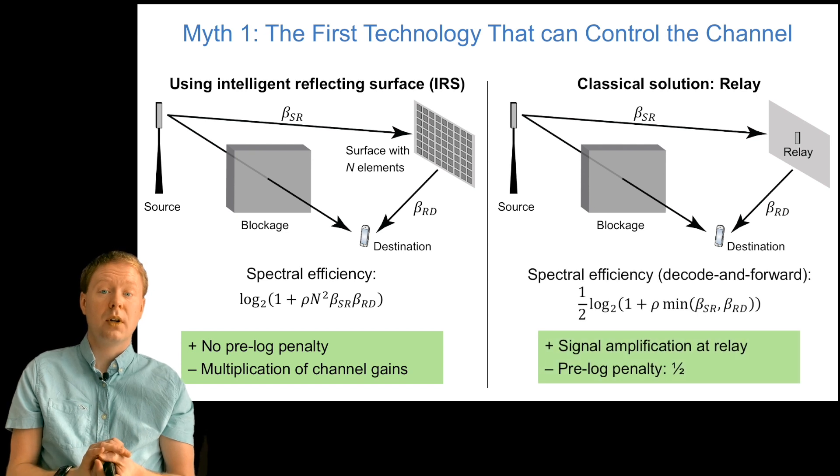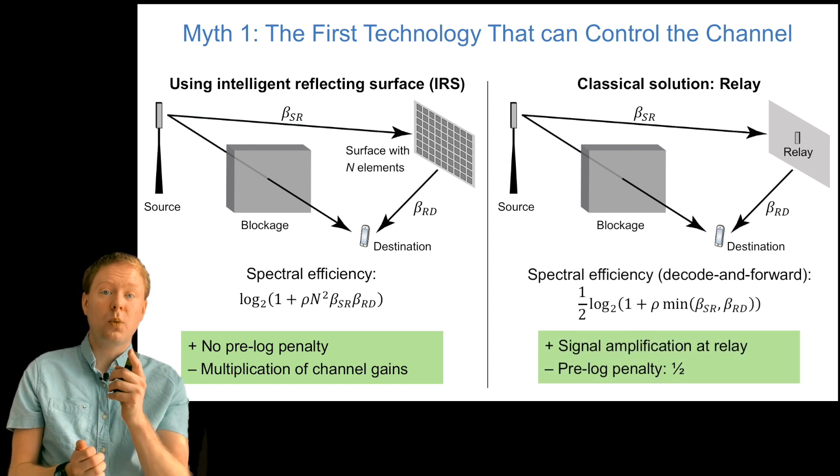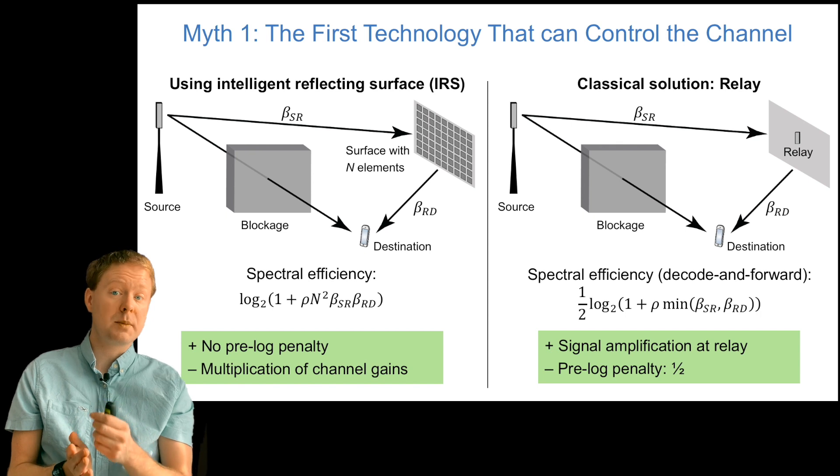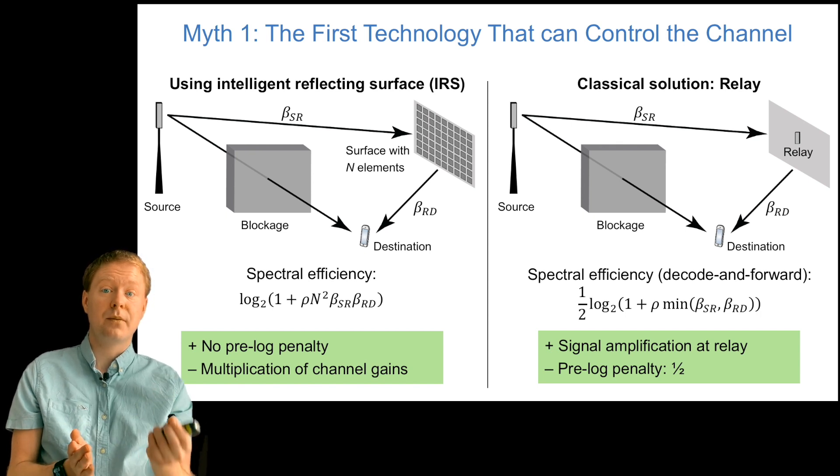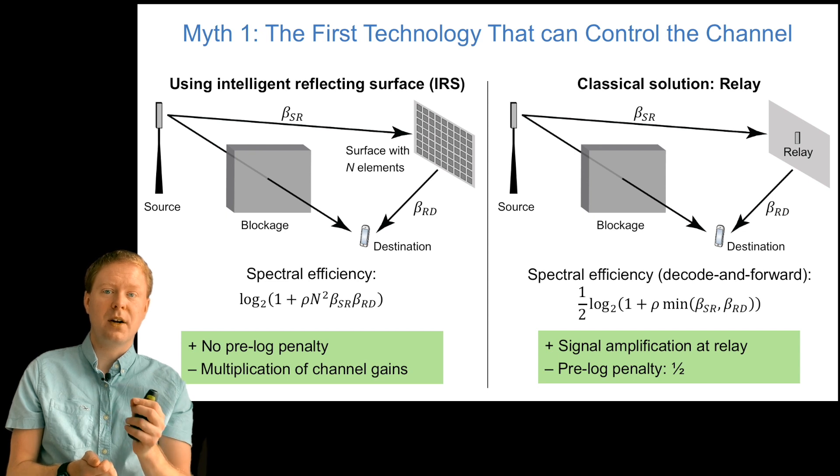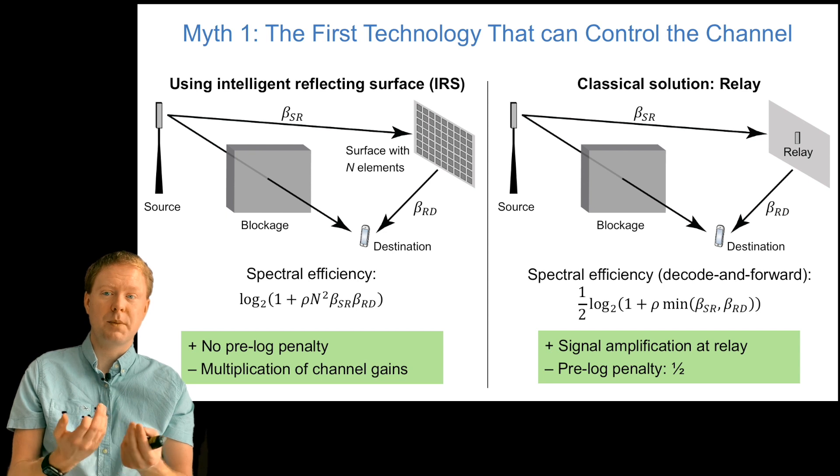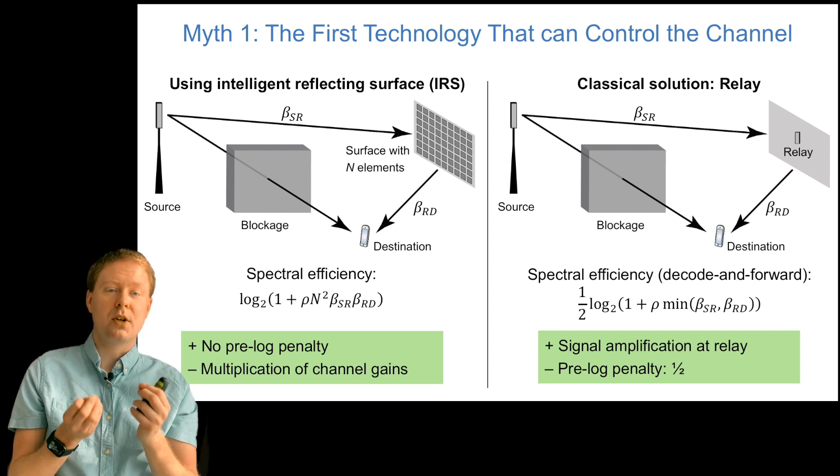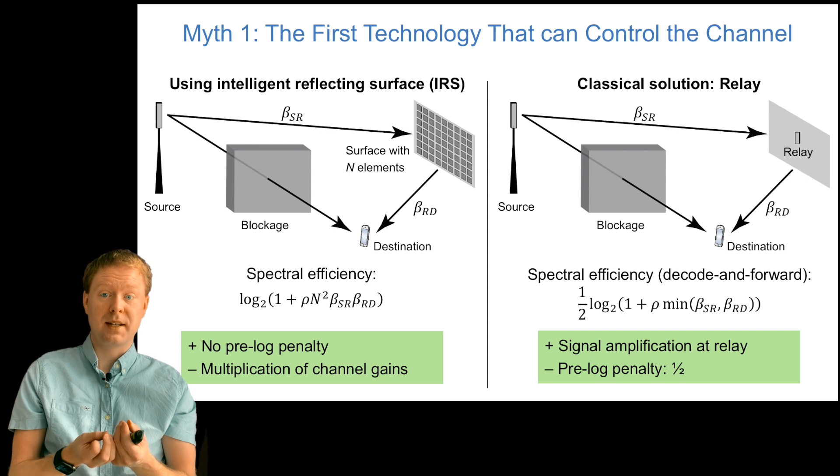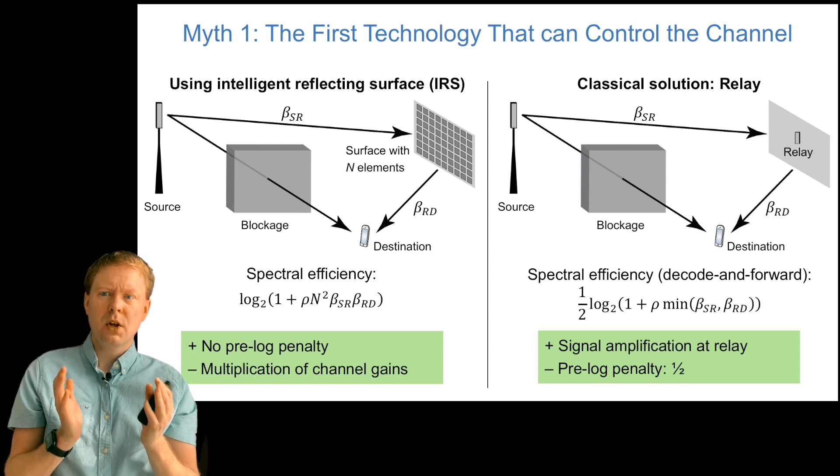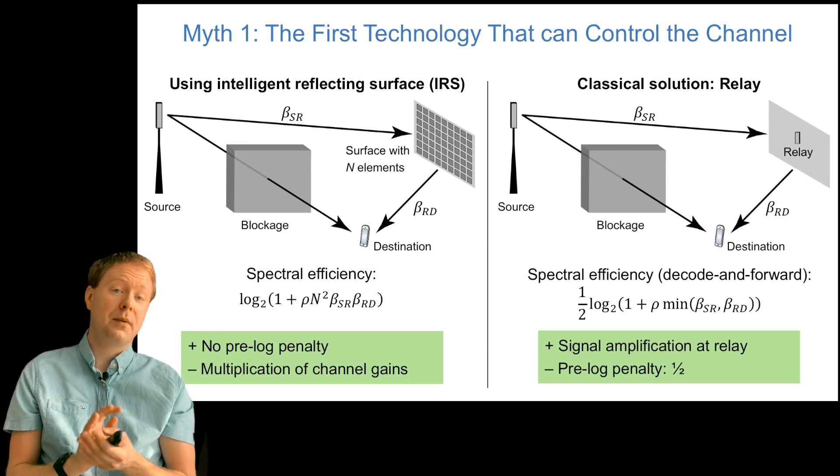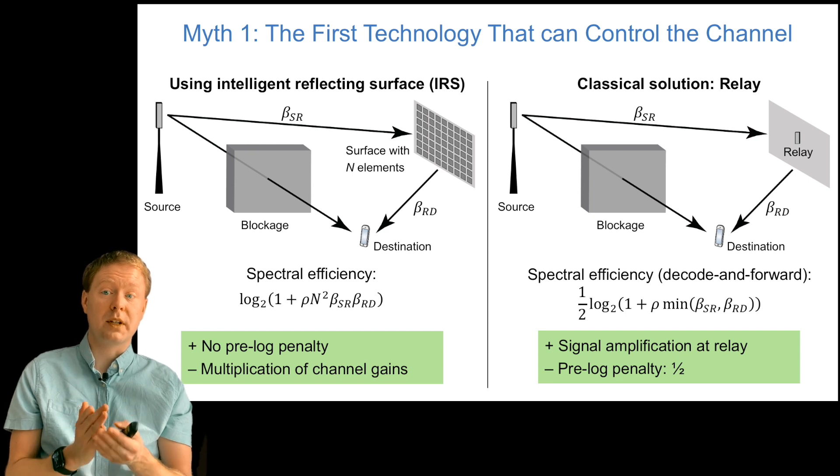If we compare this with the typical decode and forward relay, we get a 1/2 in front of the logarithm, because we first transmit from the source to the relay, and then from the relay to the destination. Inside the logarithm, we get 1 + rho, same transmit power, but the minimum of the two path losses, the two beta-sr and beta-rd. The good thing is the signal amplification that happens in the relays. We don't get the product, but the worst of the two channel gains. However, the bad thing is the pre-log factor.